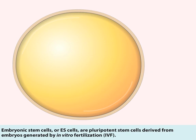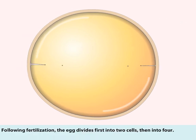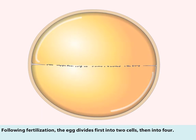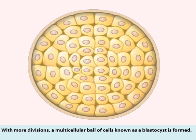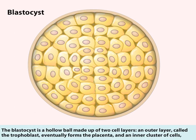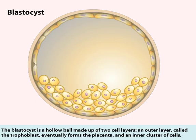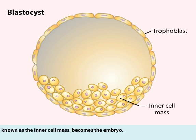Embryonic stem cells, or ES cells, are pluripotent stem cells derived from embryos generated by in vitro fertilization. Following fertilization, the egg divides first into two cells, then into four. With more divisions, a multicellular ball of cells known as a blastocyst is formed. The blastocyst is a hollow ball made up of two cell layers: an outer layer called the trophoblast, which eventually forms the placenta, and an inner cluster of cells known as the inner cell mass, which becomes the embryo.